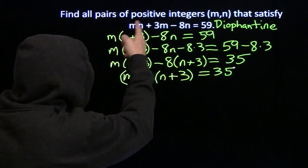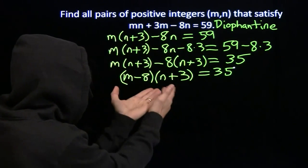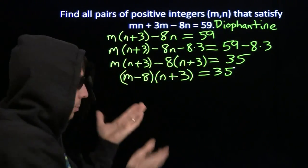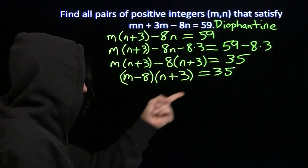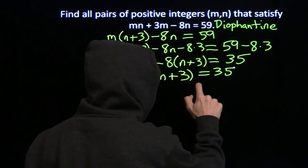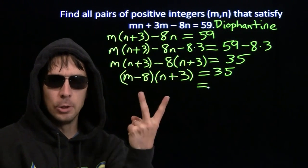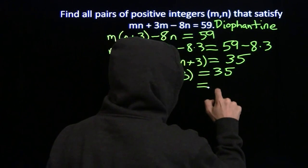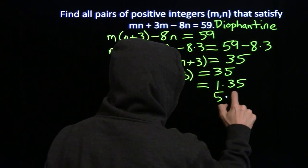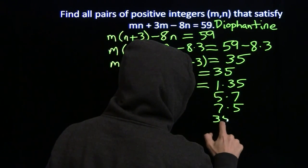Now, there are only so many pairs of integers that multiply together to give us 35. And here we're restricting even more. We want positive integers. So if m and n are positive, well, we know at least n plus 3 has to be positive. So we need m minus 8 to be positive as well to get a positive 35. So we need both of these to be positive. So now we just have to think about the ways in which we can write 35 as a product of two positive integers. Well, there aren't a whole lot of those. There's 1 times 35, there's 5 times 7, 7 times 5, and 35 times 1.